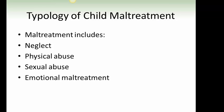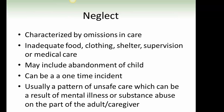Typology of child maltreatment includes neglect, physical abuse, sexual abuse, and emotional maltreatment. Neglect is characterized by omissions in care — inadequate food, clothing, shelter, supervision, or medical care — and may include abandonment. It can be a one-time incident, but is usually a pattern of unsafe care which can result from mental illness or substance abuse on the part of the adult caregiver.